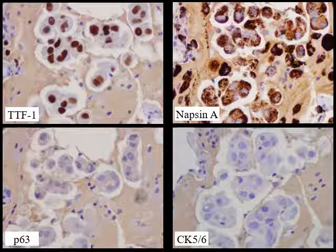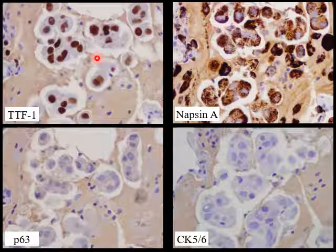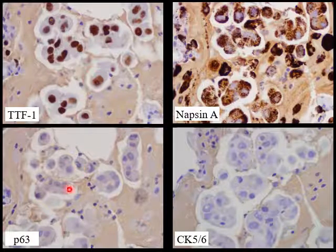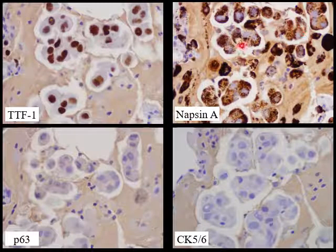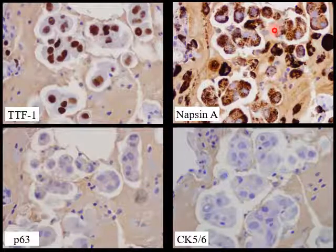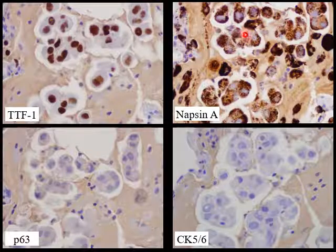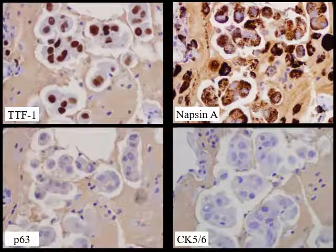Here's an example of Napsin A staining in an adenocarcinoma of the lung. TTF1 on the top left shows nuclear staining, as you would expect in a lung adenocarcinoma. At bottom left is P63, which is usually negative in adenocarcinomas of the lung. CK56, another squamous marker, is also usually negative. The top right shows Napsin staining, which is beautifully cytoplasmic and granular, with the nuclei completely negative. Because 80% are positive, that also means 20% are negative, so neither Napsin negativity nor TTF negativity excludes adenocarcinoma of the lung.